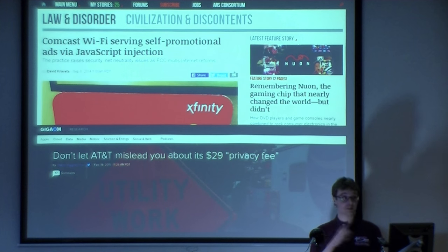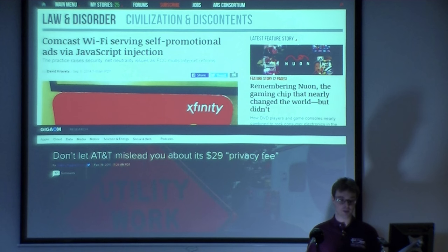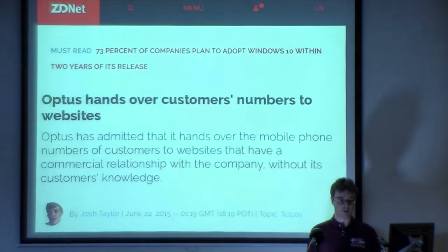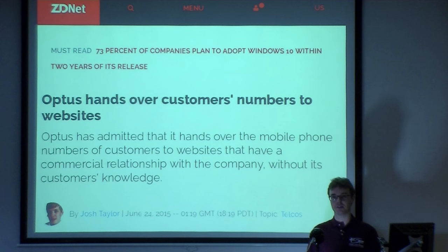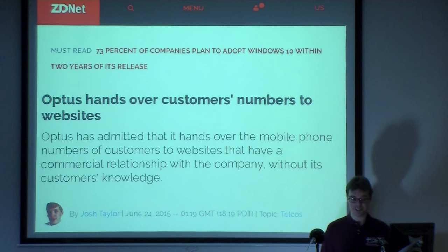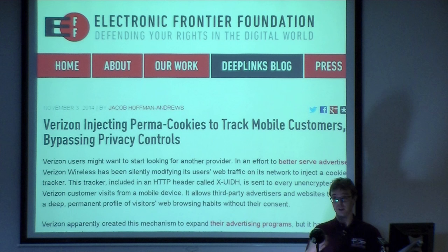Coming back to HTTPS, another reason it's really important is that your ISP is also spying on you. Comcast was injecting hostile JavaScript into your HTTP pages. AT&T was doing something similar. Cell phone providers like Optus in Australia would add your phone number as an extra request header to any HTTP requests you made over the internet. Verizon did basically the same thing with a unique identifier. They were able to modify HTTP traffic, so they were able to do this. Over HTTPS, they can't modify the requests, so they can't do this.